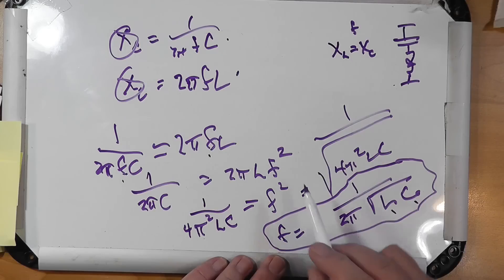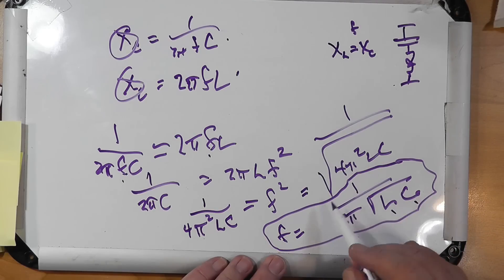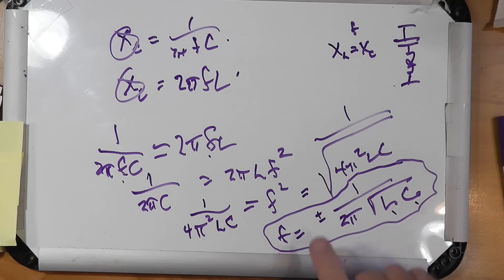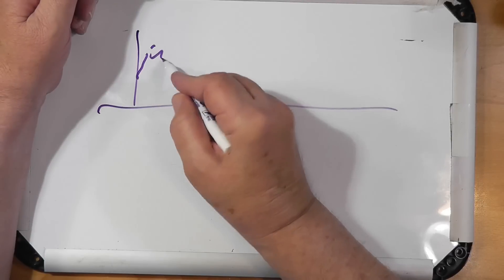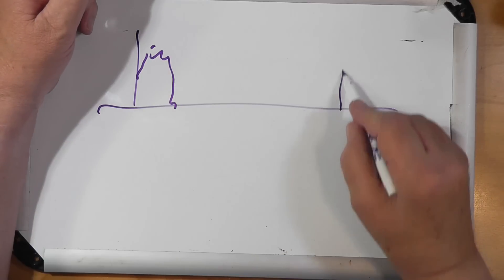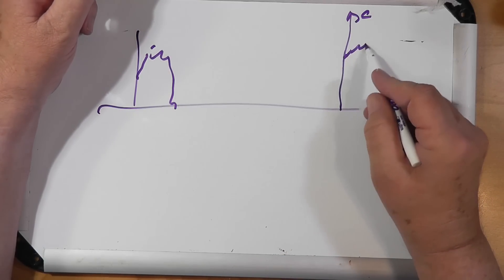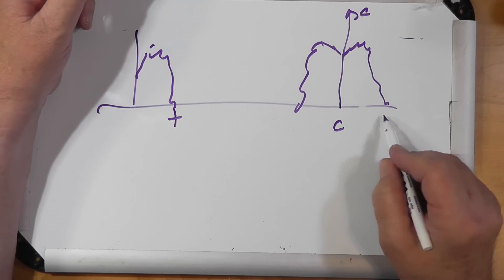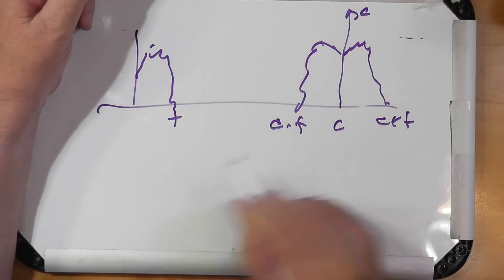We took a square root, which gives a plus and minus answer. In amateur radio we use the positive value, but negative frequencies do show up in spectra. For example, if we have an audio frequency and use amplitude modulation, we get a carrier at frequency C, a positive sideband at C plus F, and a negative sideband at C minus F — that's where negative frequencies come in.